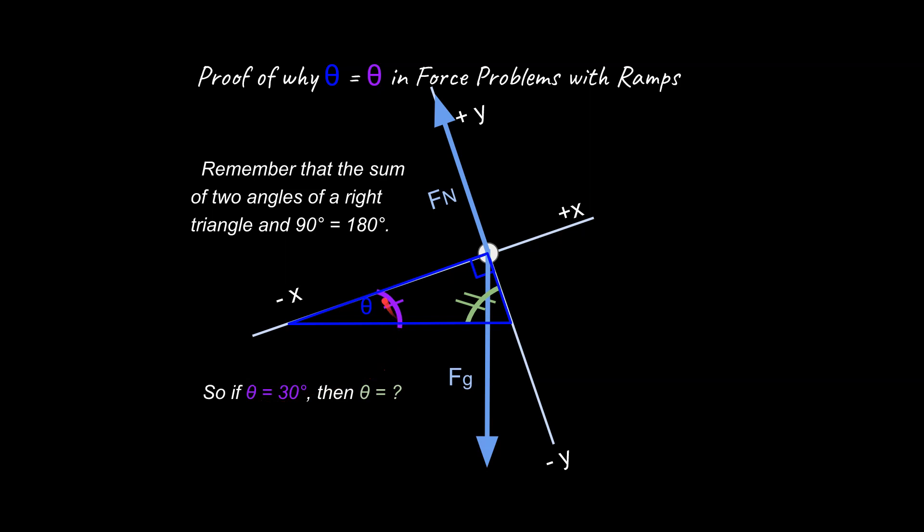So I could ask you if this is 30 degrees, just to make very simple numbers. If this is 30 degrees, what is this angle going to be? And hopefully you can come up with the idea that that is going to be 60 degrees over here. So I've drawn this angle in purple, this angle in green.